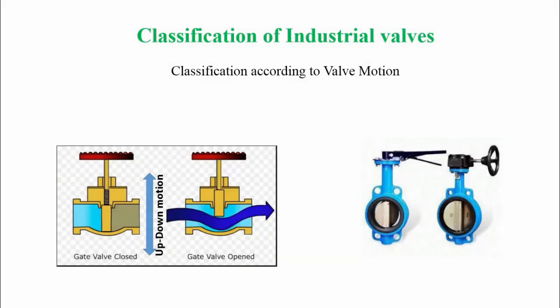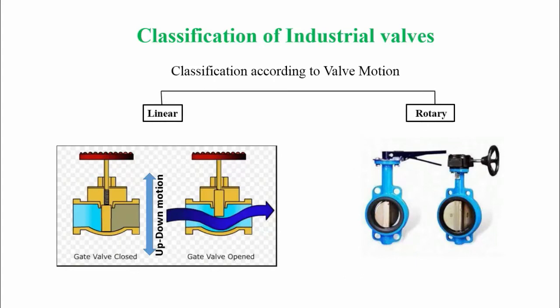Now here you see the classification of industrial valves according to their valve motion. One is linear type and another is rotary type. Linear type valves have linear motion — also called rectilinear motion — which is one-dimensional motion along a straight line. Please look at the picture: this system moves linearly, only up and down. When the stem goes upward, the fluid flows; when it goes downward, the fluid flow stops.